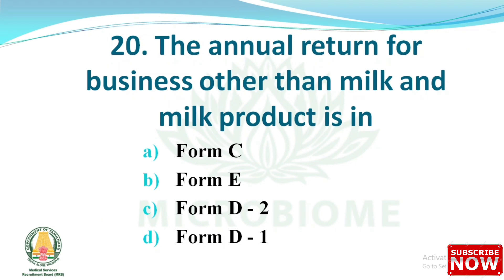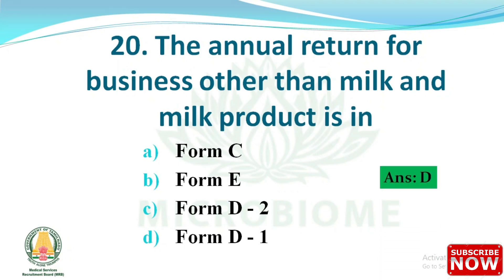Next question: the annual return for businesses other than milk and milk products is in which form? Options are: Form C, Form E, Form D2, Form D1. The right answer is option D: Form D1.